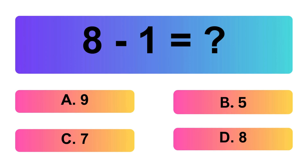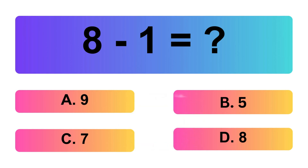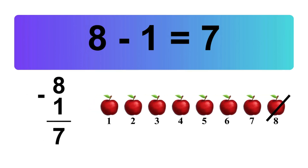8 minus 1 is equal what? Let's count it: 1, 2, 3, 4, 5, 6, 7. So, the answer is 8 minus 1 is 7.